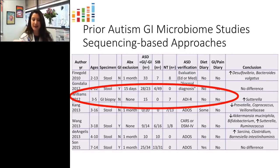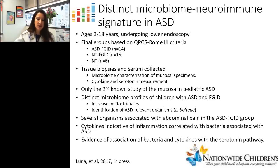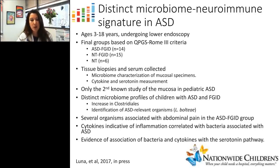Returning to prior studies on the gut microbiome in ASD: there was a single study by Williams et al. that utilized gastrointestinal biopsies. While subject numbers were small, the findings remain highly relevant — especially their report of increased Clostridiales in the ASD group. In collaboration with Kent Williams at Nationwide Children's Hospital, we are now publishing a second study of the mucosal microbiome in ASD, currently in press. This included 35 children ages 3 to 18 undergoing lower endoscopy, with serum collected for measurement of serotonin and inflammatory cytokines.